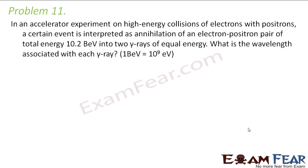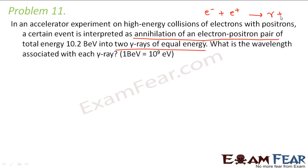Here comes problem number 11. In an accelerator experiment on high energy collisions of electrons with positrons, a certain event is interpreted as annihilation of an electron-positron pair of total energy 10.2 BeV into two gamma rays of equal energy. That means an electron is combining with a positron, resulting in two gamma rays of equal energy. What is the wavelength associated with each gamma ray? It is given that the energy of each gamma ray is the same — let us call it E.